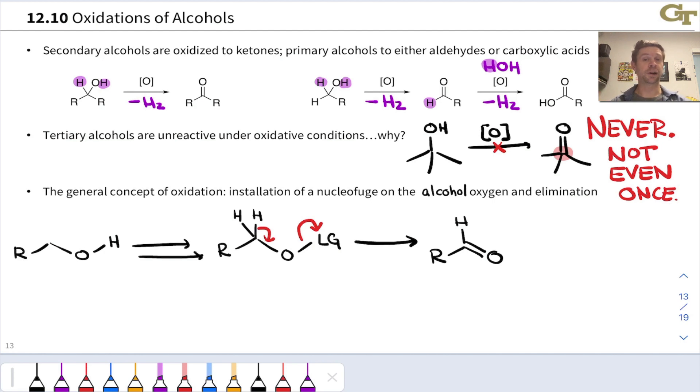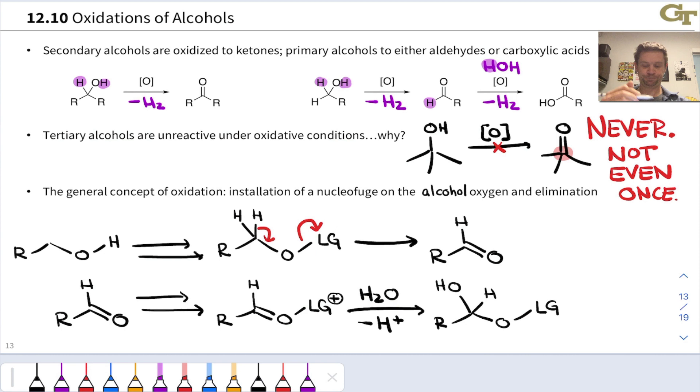From the aldehyde, further oxidation can occur. Imagine now we coordinated some good leaving group to the carbonyl oxygen. Addition of water to this intermediate and loss of a proton would lead to something like this. Now we've set up a situation again where we have a saturated oxygen linked to a leaving group and a potentially acidic hydrogen. Electron flow like this would establish yet another CO double bond, leading to a carboxylic acid.